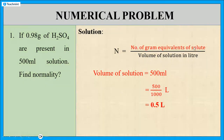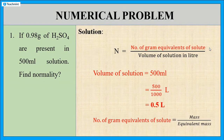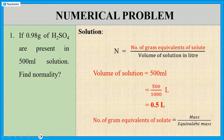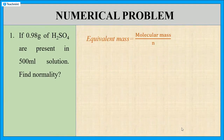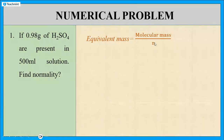Now we want the number of gram equivalents of solute. The formula is: number of gram equivalents of solute equals mass of the solute divided by equivalent mass. Here, the solute is sulphuric acid. The mass of the solute is given in the problem — it is 0.98 grams. Now we want the equivalent mass of sulphuric acid, which equals molecular mass of sulphuric acid divided by N, the valency factor.